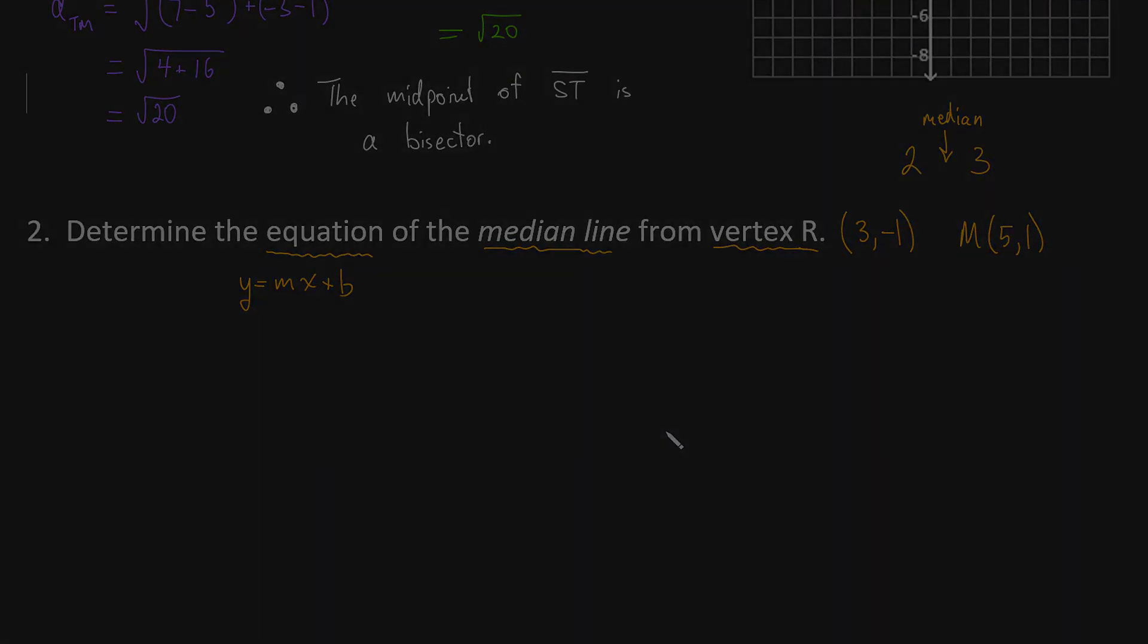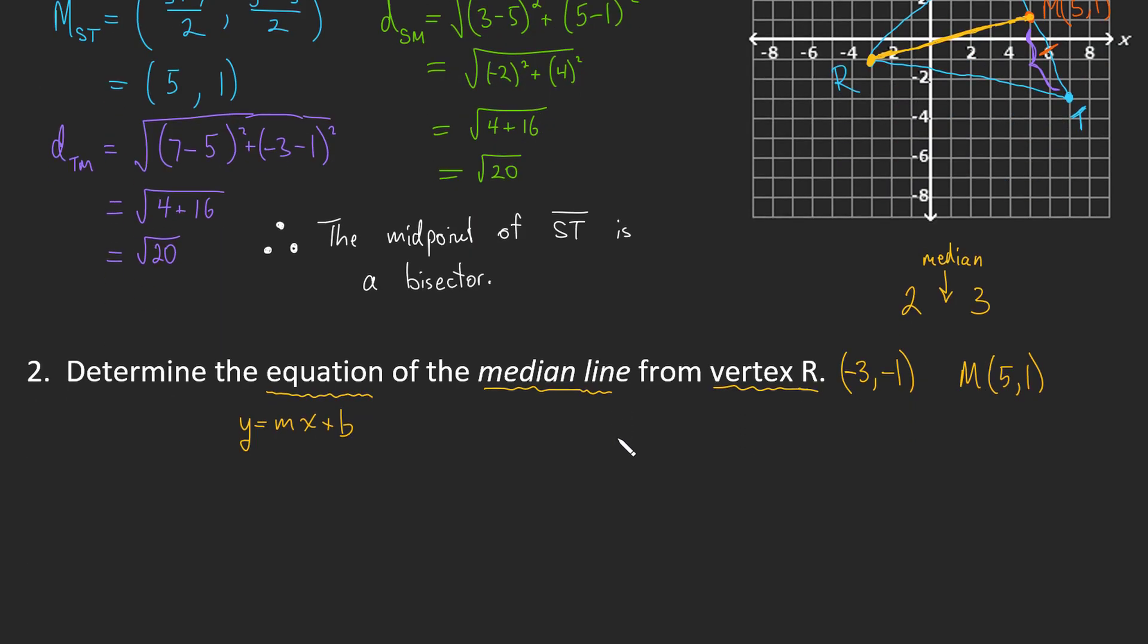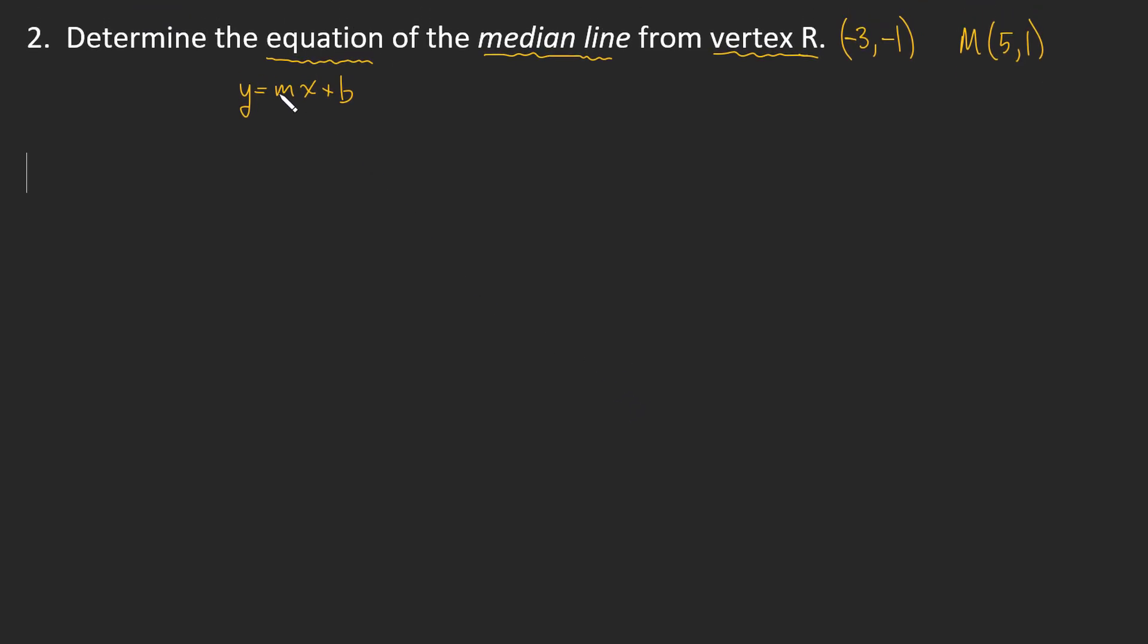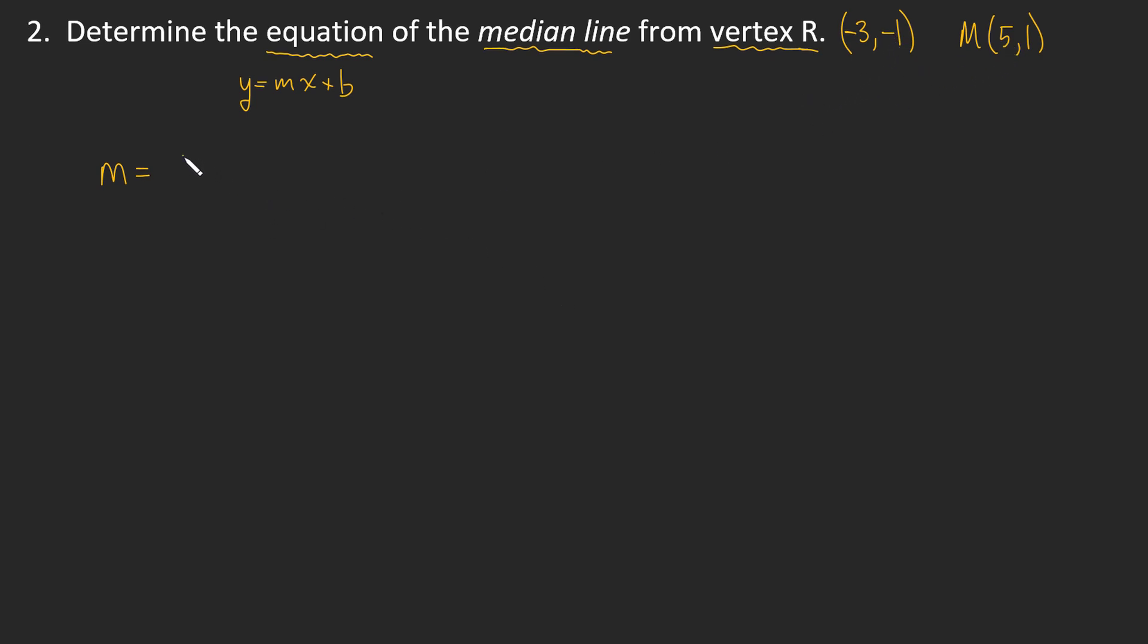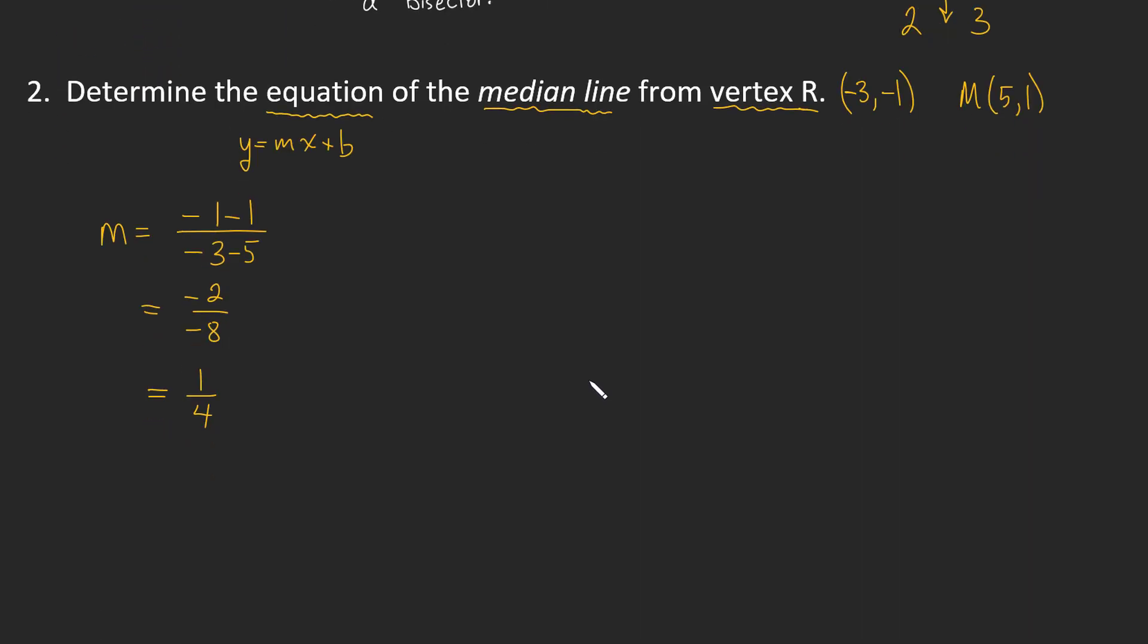So we're ready to go. We've got our two points. We have enough information. We're going to need to find the slope. So negative 1 take away 1, that's negative 1 take away 1 over negative 3 take away 5. That's negative 2 over negative 8, and so we get a nice positive slope of 1 quarter. And we can check that. We can go back up to our graph and see if a slope of a quarter makes sense. So up 1, over 4, up 1, over 4. It's working. That's the right slope.